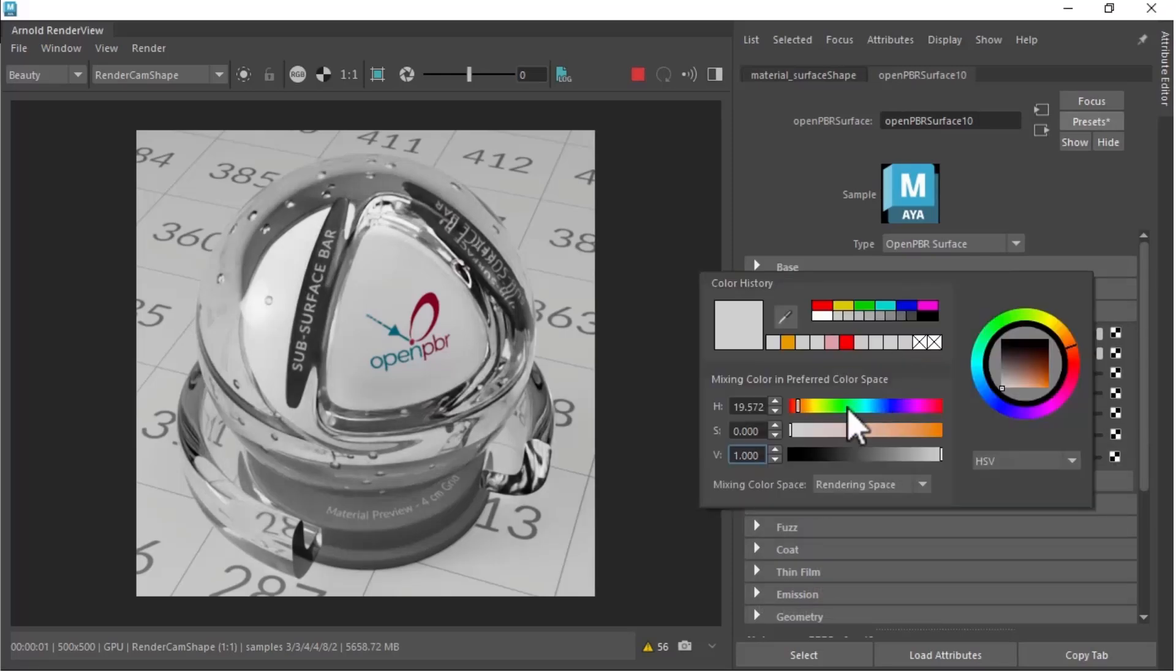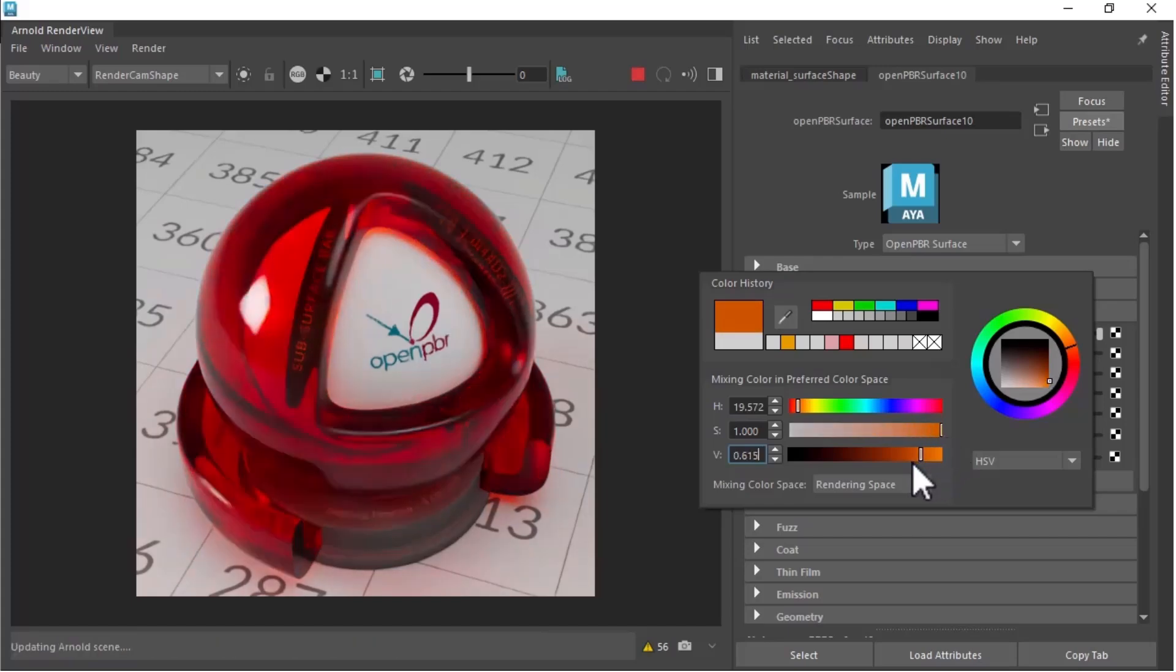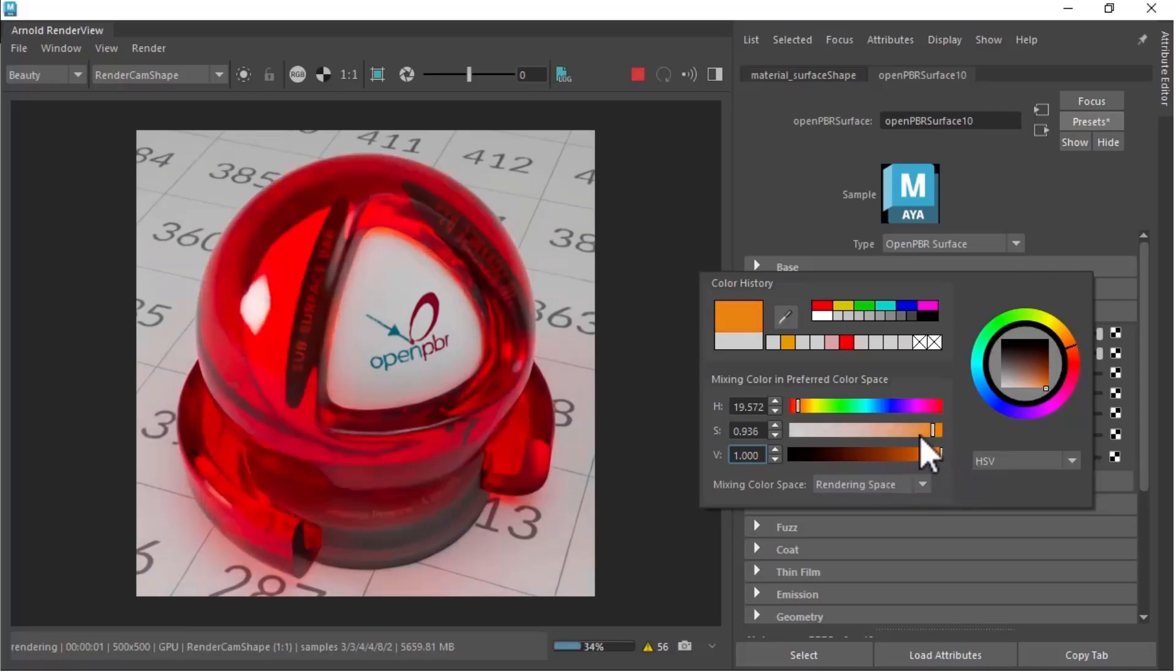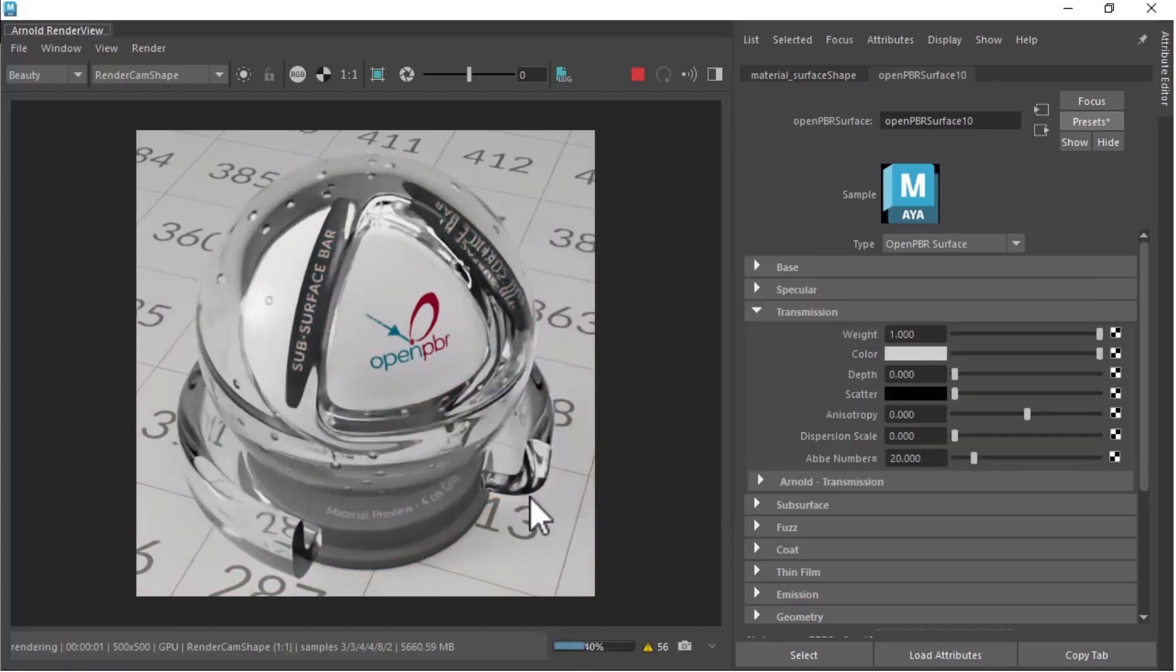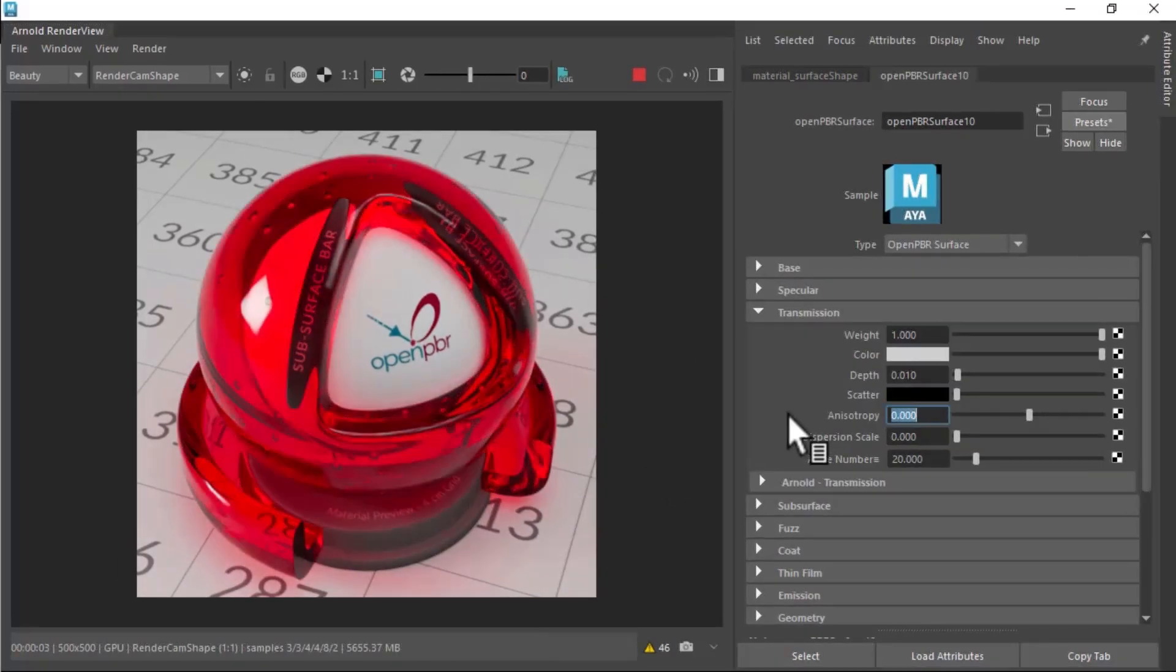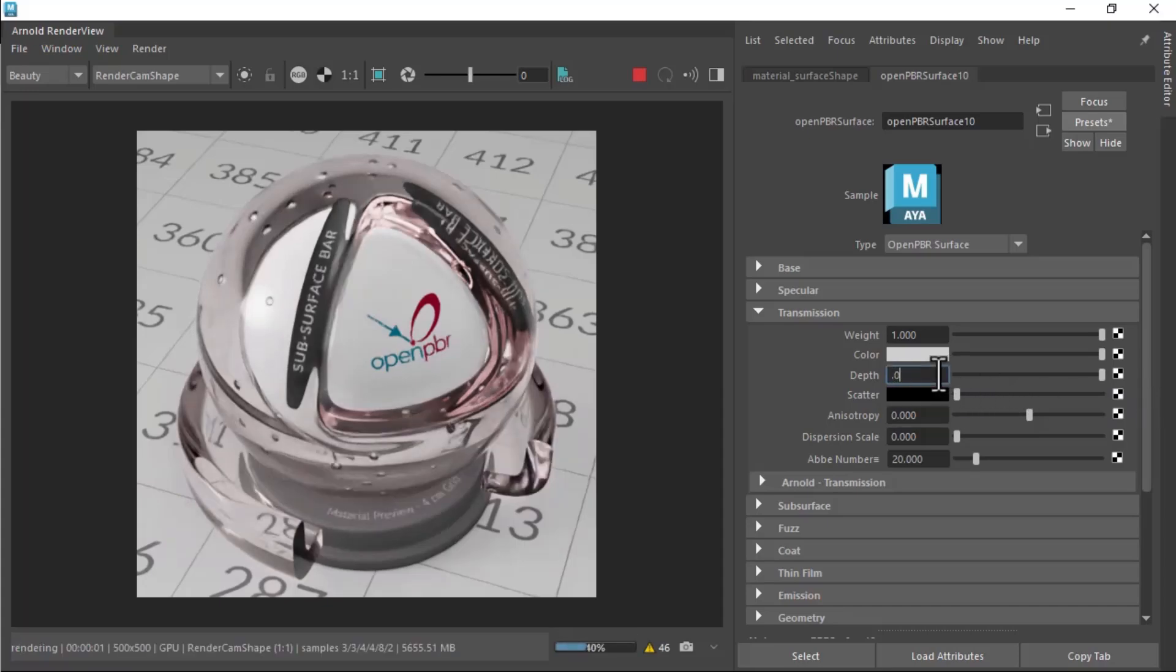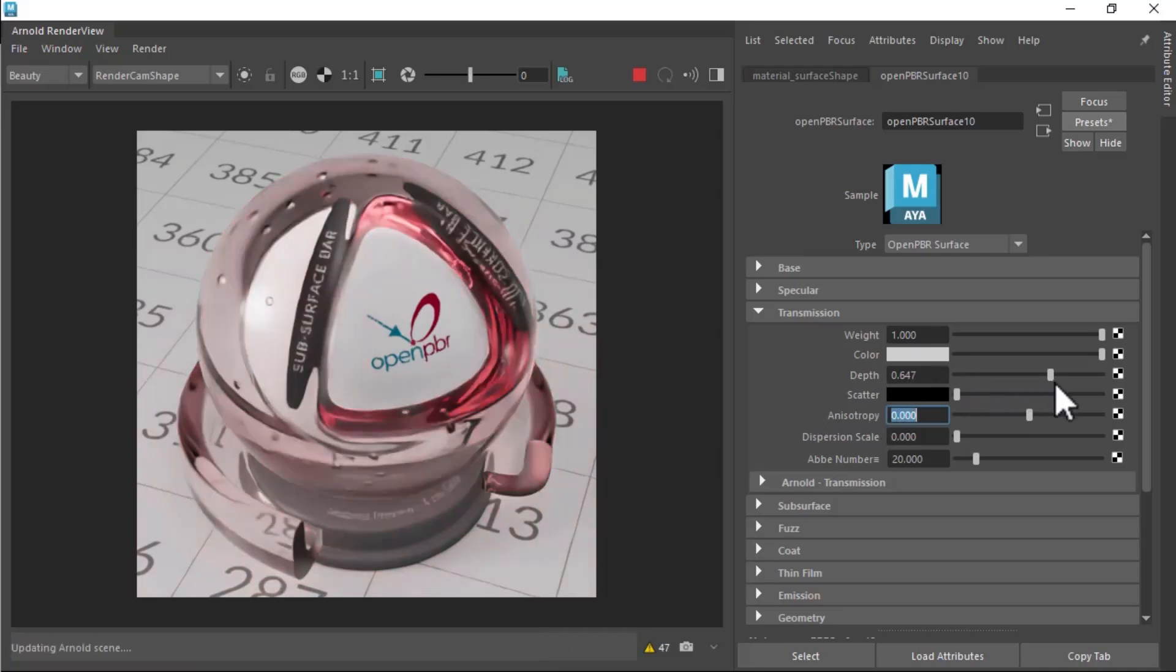In the transmissive mode, the material also supports an internal volume, though is designed to be more suitable for a less dense medium than the subsurface model. The transmission color controls the so-called Beer's Law absorption, tinting the color of the transmitted light with deeper colors in thicker areas. The transmission depth, similar to subsurface radius, defines the distance which light travels inside the material before being absorbed or scattered. The higher the transmission depth, the more translucent the material, similar to subsurface radius.